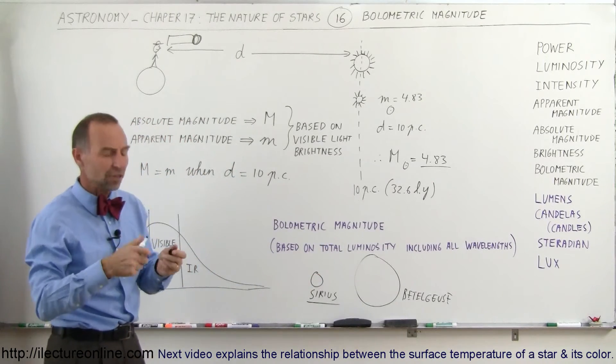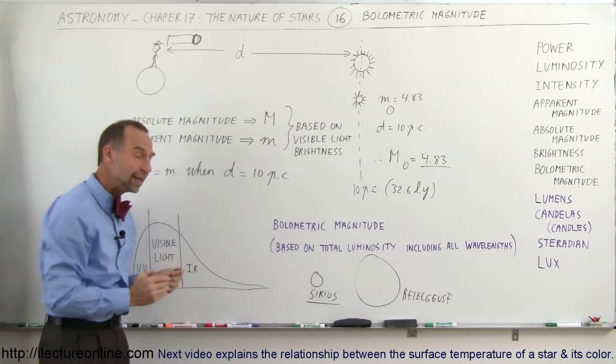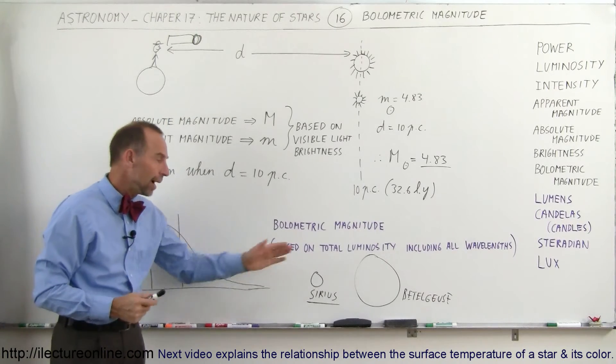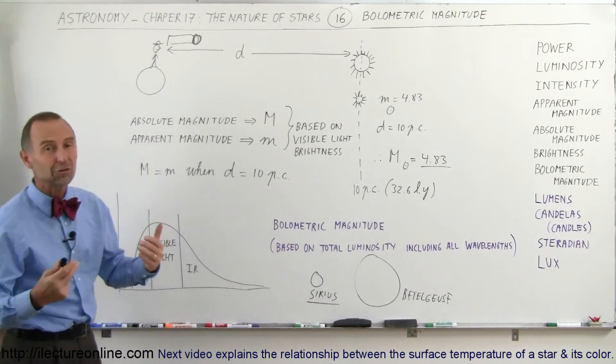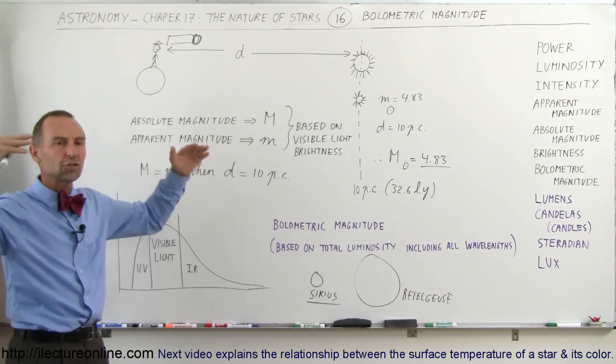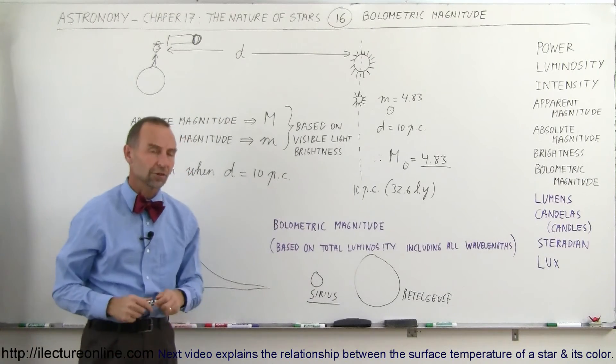But the vast majority of that luminosity is in the infrared, and very little visible light and UV are being emitted by Betelgeuse in comparison to the amount of energy it radiates in the infrared, simply because it's a very large star, and the surface is relatively cool compared to the surface of Sirius.